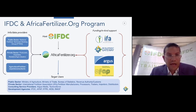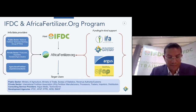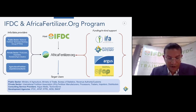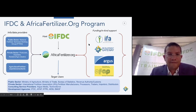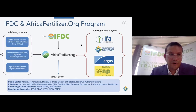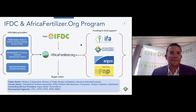AfricaFertilizer.org combines information from partners including IFA, Development Gateway, Argus, and AFAP, presenting two main types of data: fertilizer statistics covering production, trade, consumption, prices, and fertilizer use by crop; and market intelligence covering policies, regulations, subsidy programs, business directories, and publications. This data is free to access and used by ministries of agriculture, trade, bureau of statistics, private sector, consulting firms, development banks, and various donors.